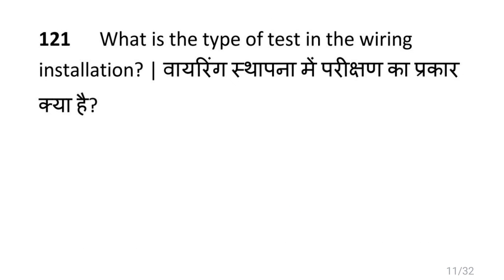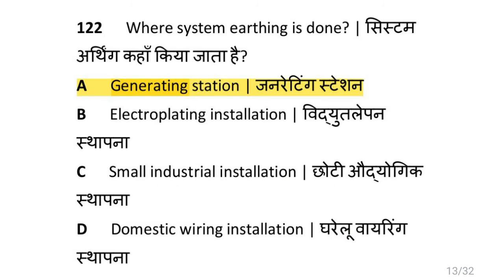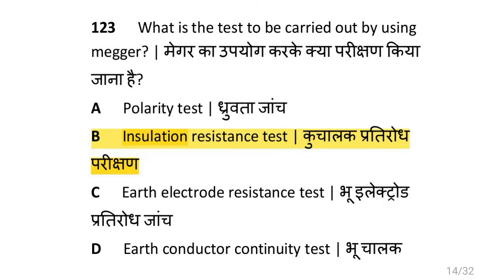What is the type of test in the wiring installation? Insulation resistance test between conductor and earth. Where is system earthing done? That is at the generating station. What is the test to be carried out by using MAGR? Insulation resistance test.